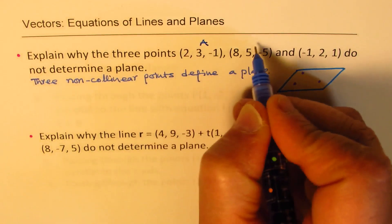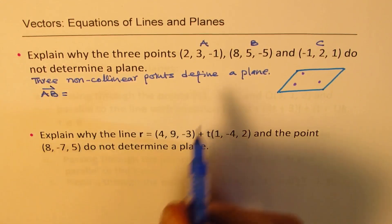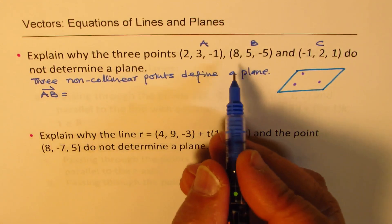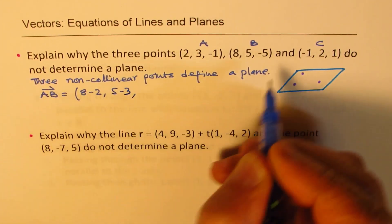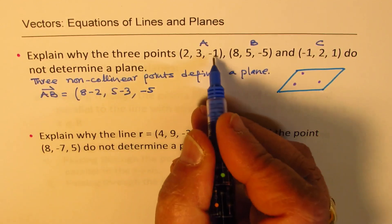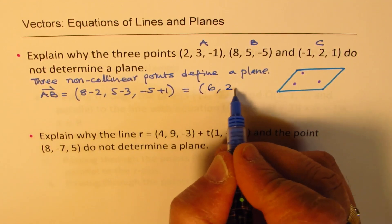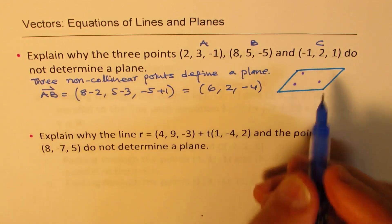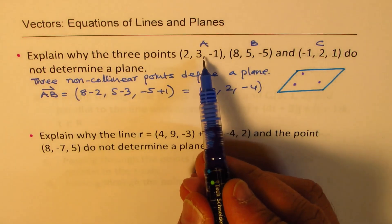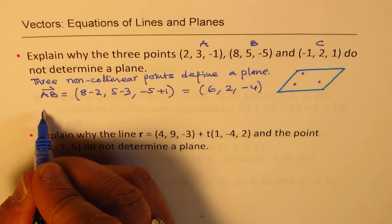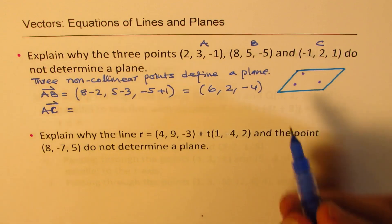So that means that if I prove that these points are collinear, in that case they cannot define a plane. So let's label these points as points a, b, and c. And let's find what is the direction from a to b. So a to b will be what? So we'll have 8 - 2, 5 - 3, and -5 minus of -1 will make it +1. So this direction will be (6, 2, -4).